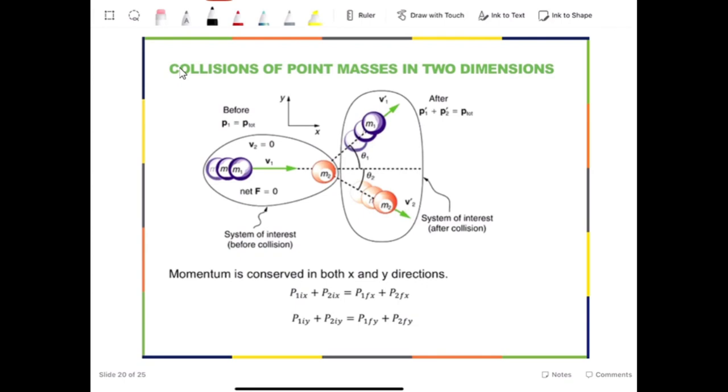As shown in this slide, the momentum now can be written in two dimensions. p1ix plus p2ix equals p1fx plus p2fx. This is in x direction. And similarly, we can write the y-direction component. p1iy plus p2iy equals p1fy plus p2fy.